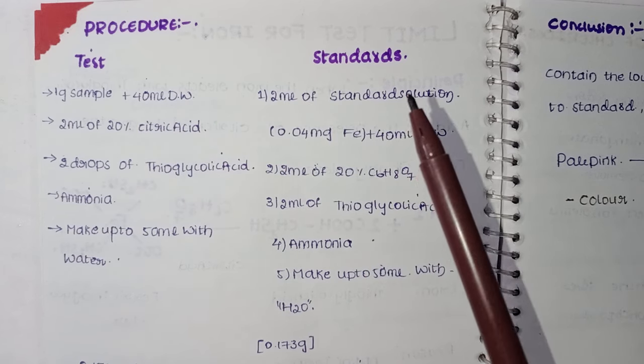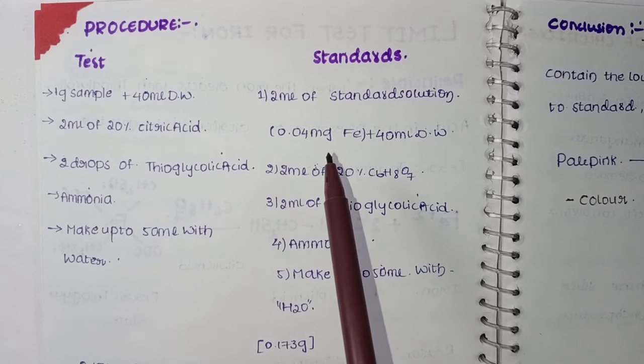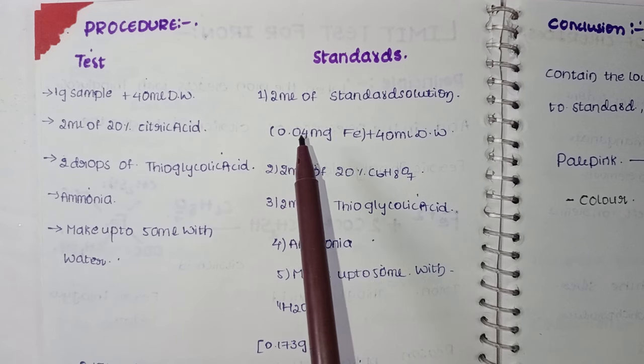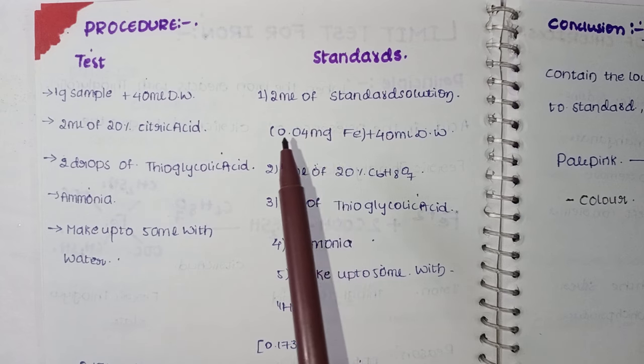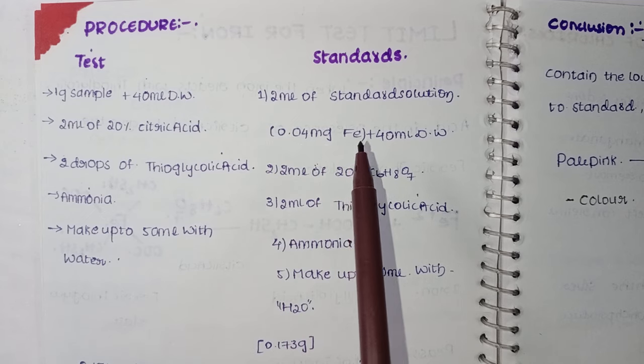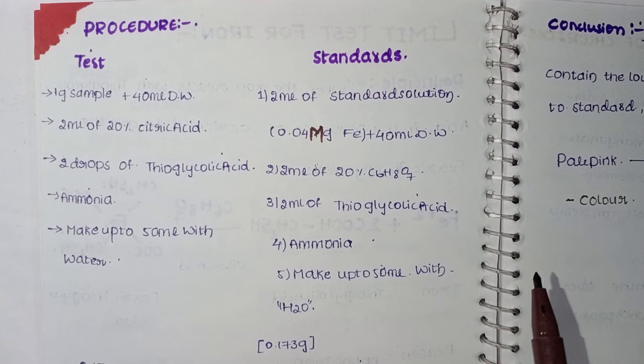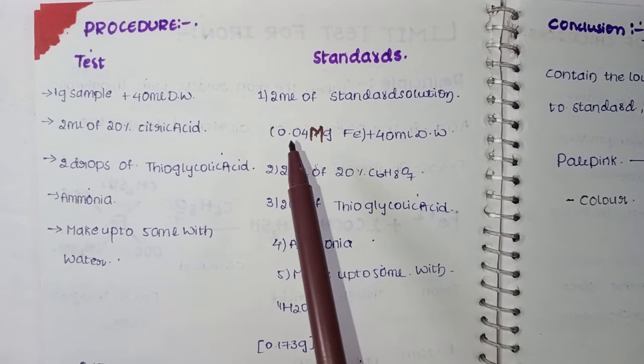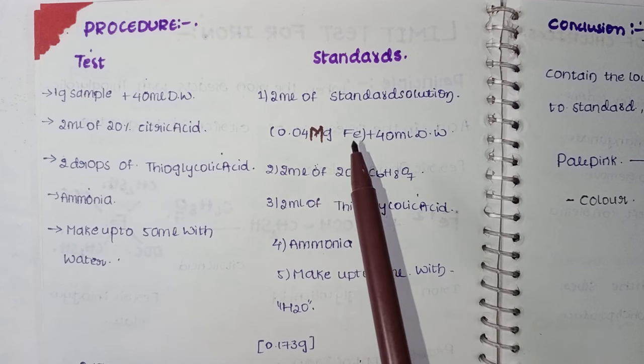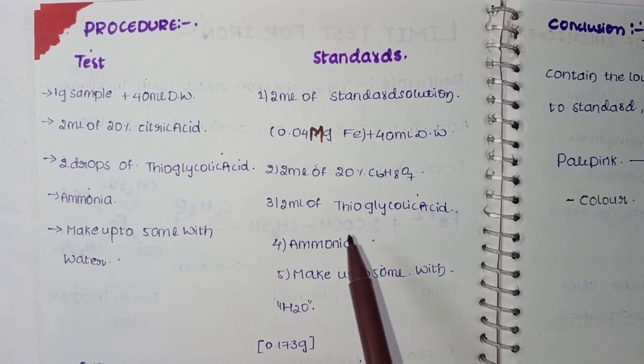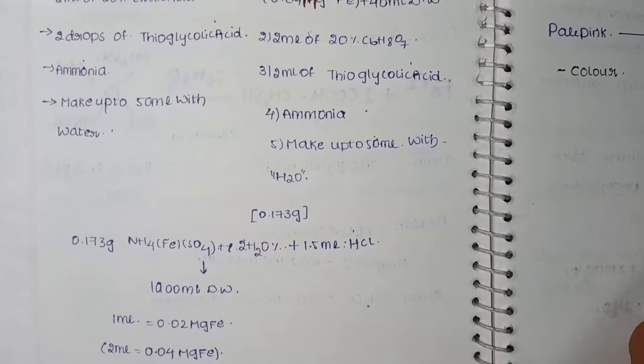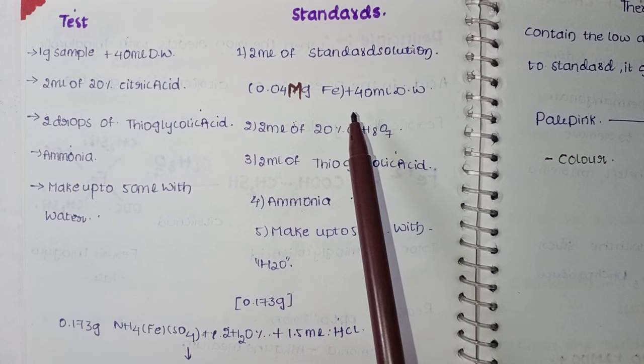For the standard solution - use the same test with 1 gram sample, but add 2 ml of standard solution. Remember, the main reaction uses a standard solution of 0.04 mg Fe. Take 0.04 mg Fe plus 40 ml distilled water, 2 ml of 20% citric acid, 2 ml of thioglycolic acid, add ammonium to keep the solution in alkaline medium, and make up to 50 ml with distilled water.